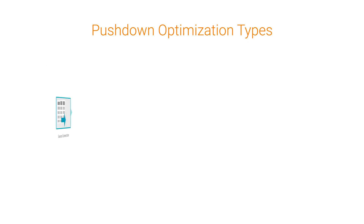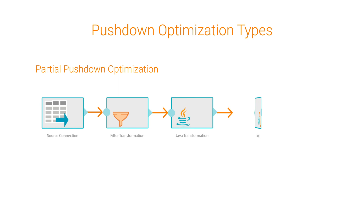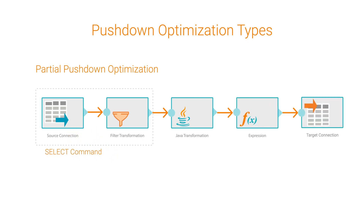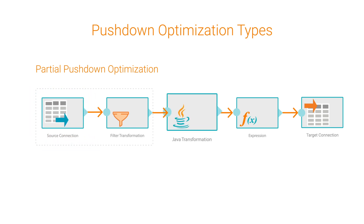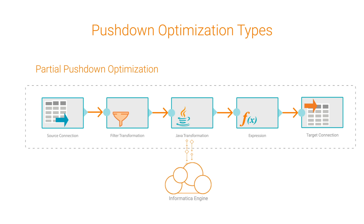For some connectors, if a transformation in a mapping is not supported, Cloud Data Integration applies Partial Pushdown Optimization. The connection configured for the mapping source runs a select command that the source and the filter generate. Then, the Informatica engine processes the transformation that can't be processed at the source or target. If the connector doesn't support partial Pushdown Optimization, the Informatica engine runs the entire mapping.